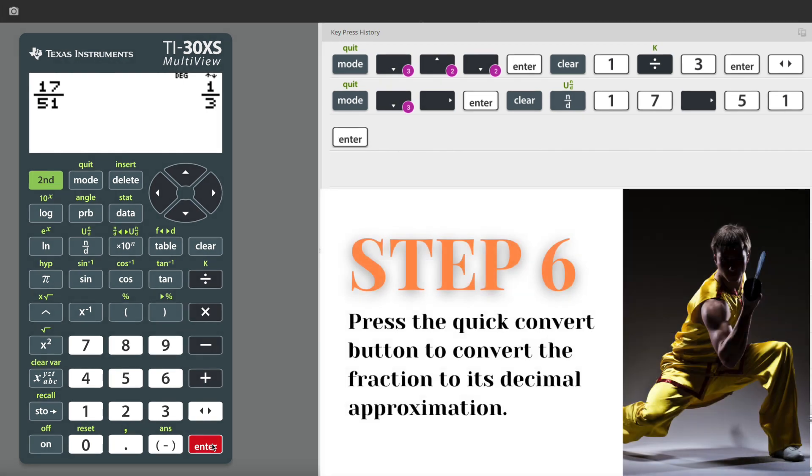And now let's quick convert to a decimal form in case my answer is in decimal form. There you go. Pressing that quick convert button, I get 0.3333.